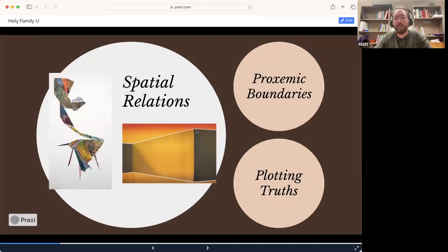So the two main bodies of work in the exhibition are the proxemic boundaries work and the plotting truths work. The work on the wall that you're sitting next to is work from the plotting truths series, whereas the work that I'm guessing is around the corner is the proxemic boundary series.